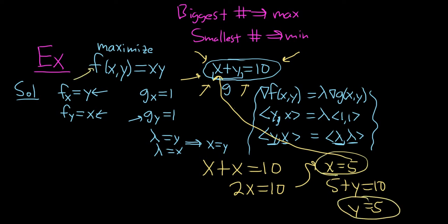We want the maximum, so we plug it back into f. So we have f of 5, 5, which equals 5 times 5, which equals 25. And that is the maximum using Lagrange multipliers.